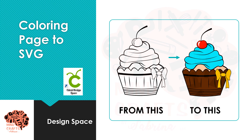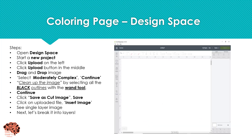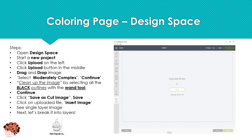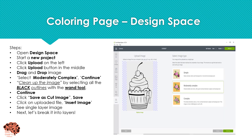So in part two, we're going to do the exact same thing — going from a coloring page to a multicolor image — but we're going to do it strictly using Design Space. So we're going to open a new project in Design Space, select Upload from the panel, and Upload again. We're going to drag and drop that file that we found on Google. I'm going to select Moderately Complex and select Continue.